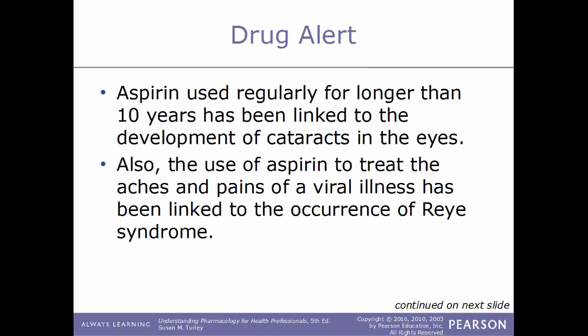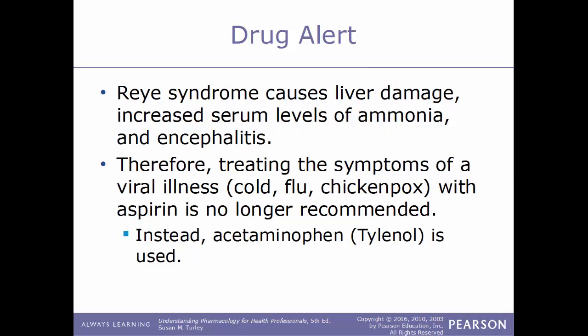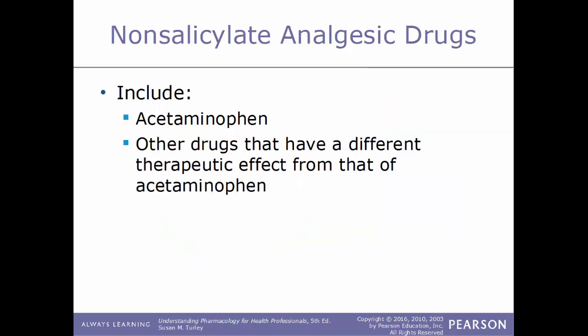Aspirin used regularly for longer than 10 years has been linked to the development of cataracts in the eyes. Also, the use of aspirin to treat aches and pains of viral illness has been linked to the occurrence of Reye's syndrome, which causes liver damage, increased serum levels of ammonia, and encephalitis. Therefore, treating symptoms of a viral illness like a cold, flu, or chickenpox with aspirin is no longer recommended. Instead, you should take acetaminophen, which is Tylenol.